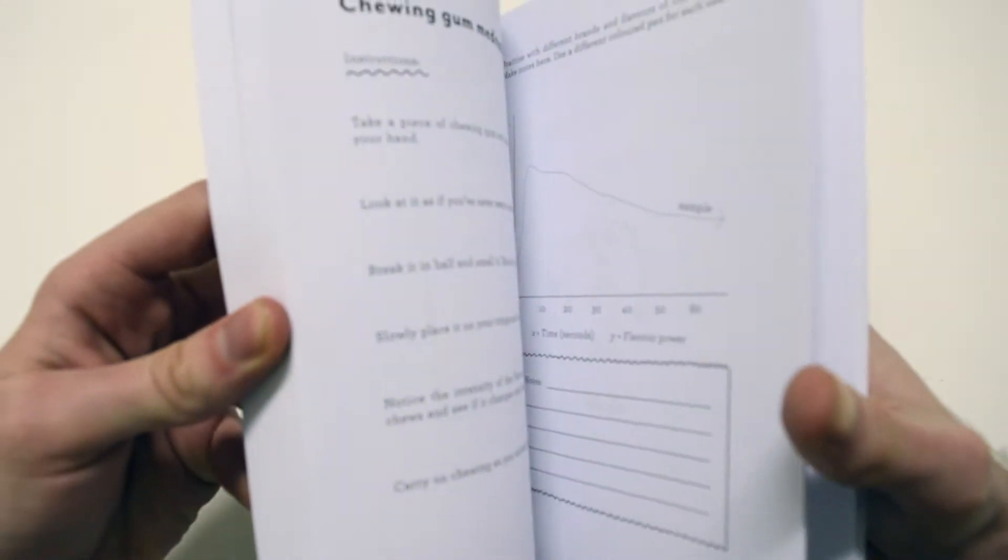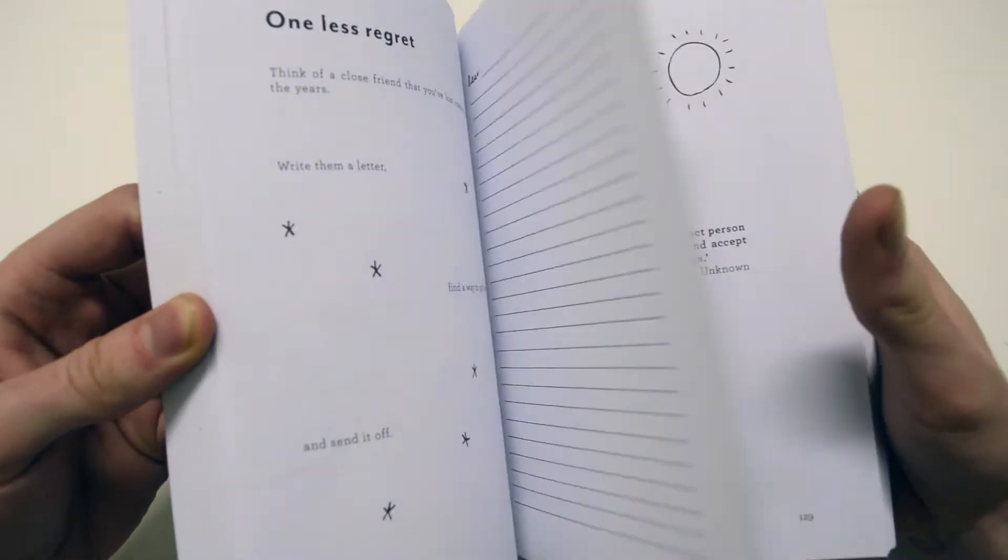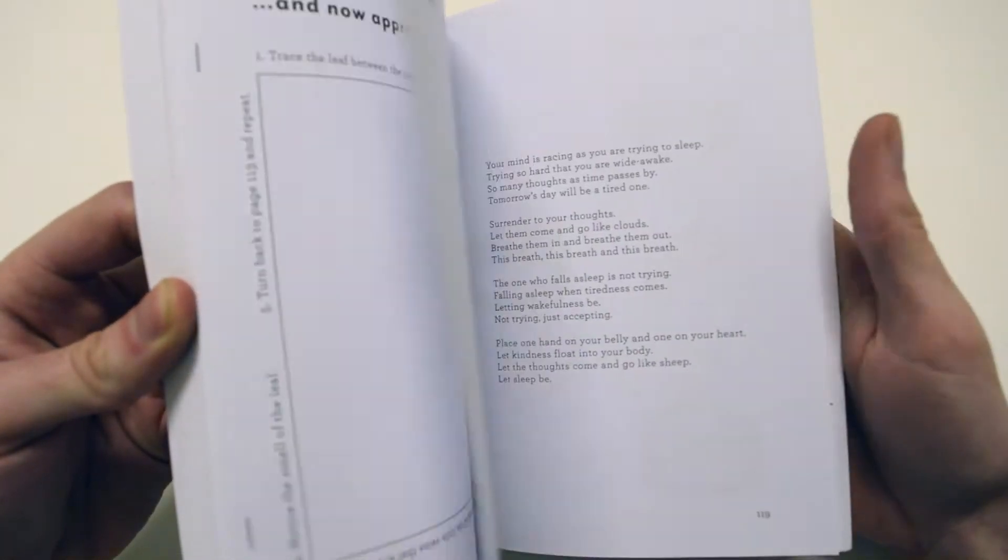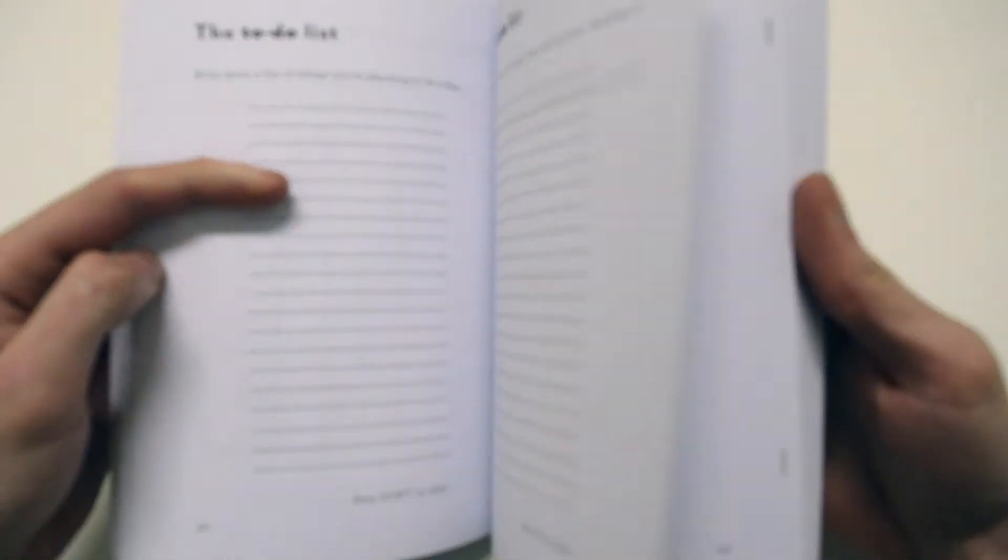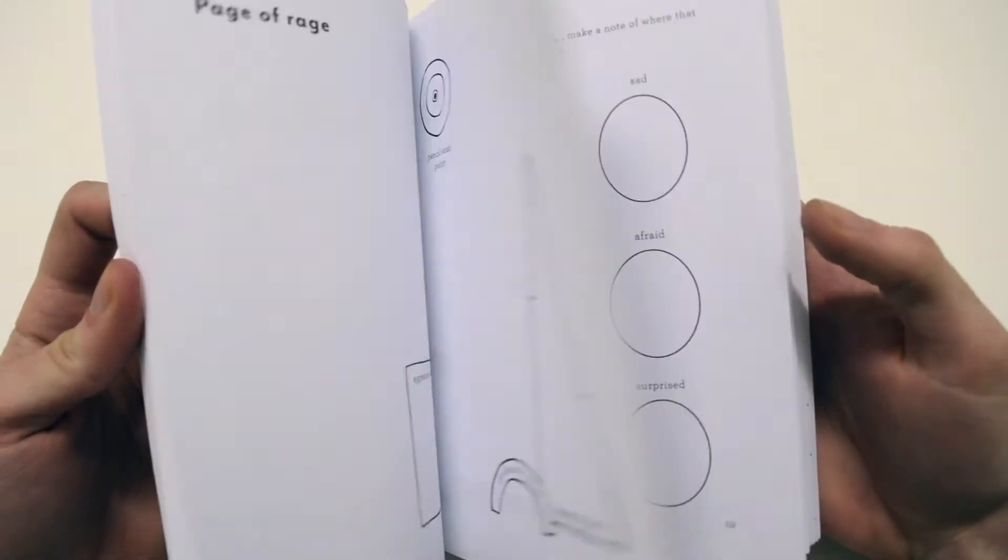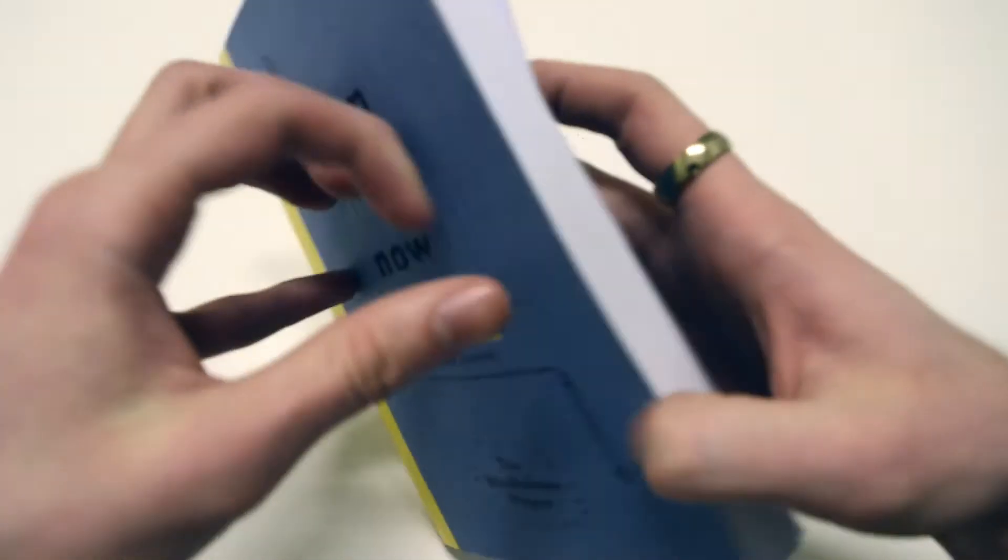This is more like a Wreck This Journal kind of style where you do things like spray a little bit of perfume on a page, staple a leaf in, or color things in. But it's still bringing that attention to being mindful in what you do. There's a couple of pages that I really like. There's the digital detox page, which we're obviously very big on.